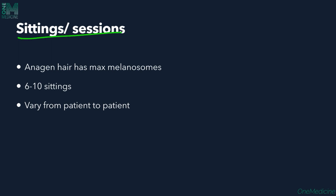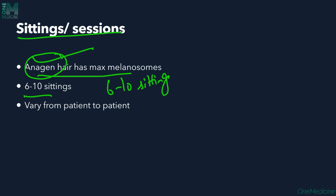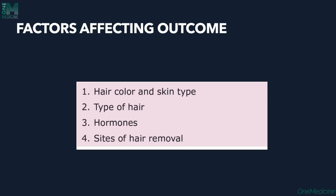The number of sittings required: anagen hairs have maximum melanosomes and are most effective. Around 6 to 10 sittings are required, depending upon the thickness of the hair, the site from which it is removed, and it varies from patient to patient. When telling a patient about this, make sure you tell them clearly it might range from 6 to 10, and it might be less or more. Factors affecting the outcome include hair color, skin type, type of hair, and whether the patient has any hormonal imbalances, as well as the site of removal.